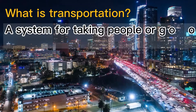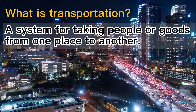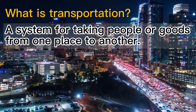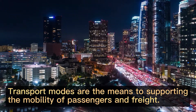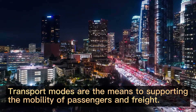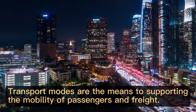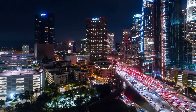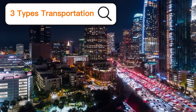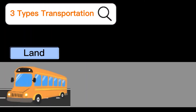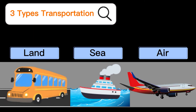Transportation is a system for taking people or goods from one place to another. Transport modes are the means to supporting the mobility of passengers and freight. Basically, there are three types of transportation, which are by land, by sea, and by air.